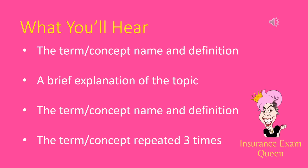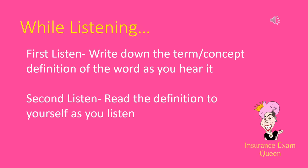This audio will go into 40 different topics from the General Insurance Terms chapter. For each one, you'll hear the term or concept name and definition, then a brief explanation, then a repeat of the definition, followed by three repetitions to sync the information into your brain. You can also boost your memorization by writing down what you hear the first time, then reading your notes while listening the second time.